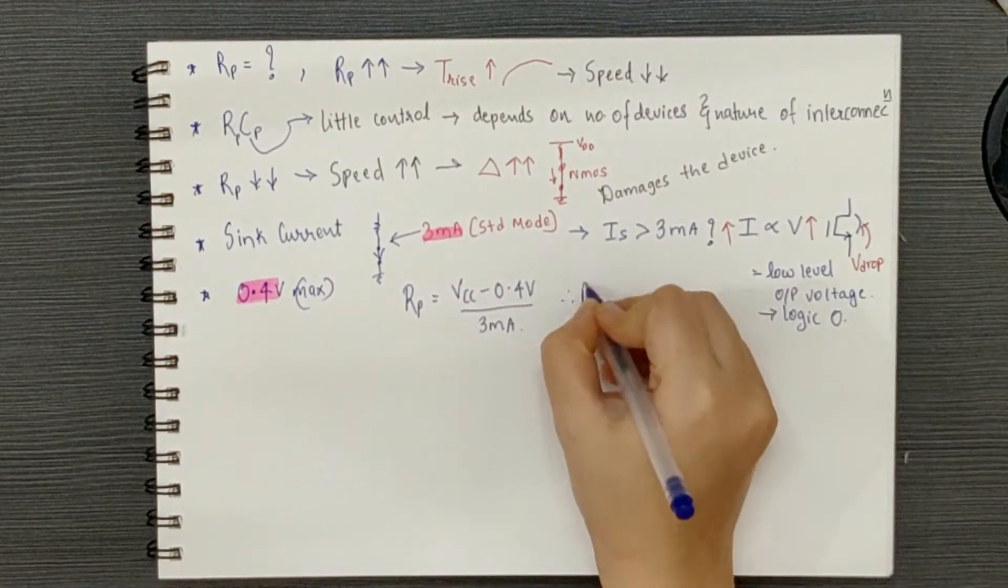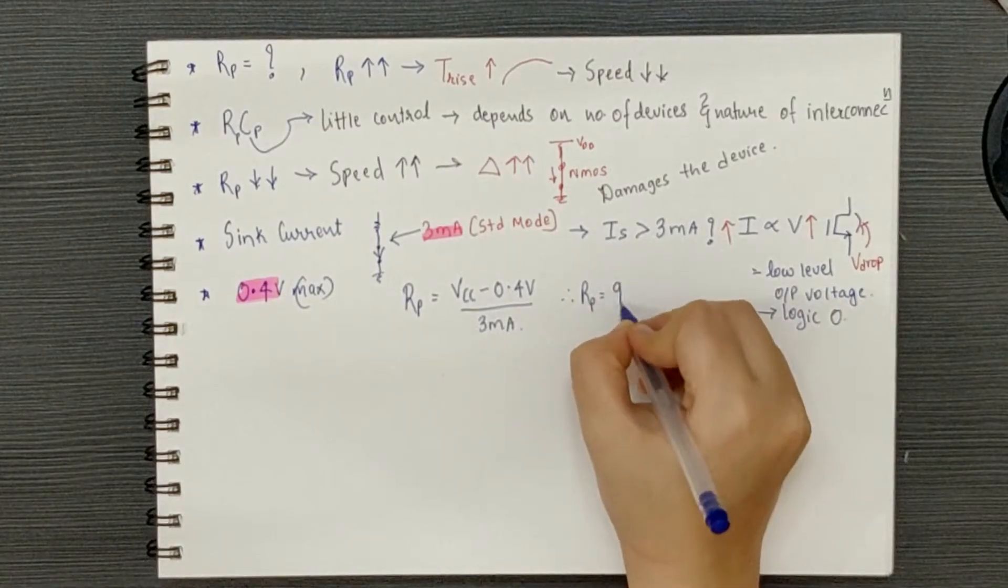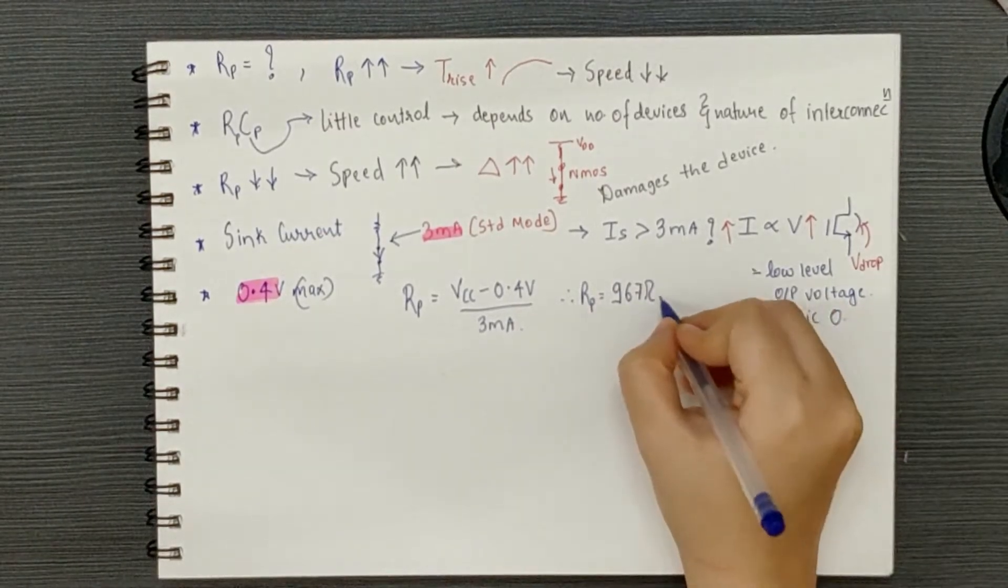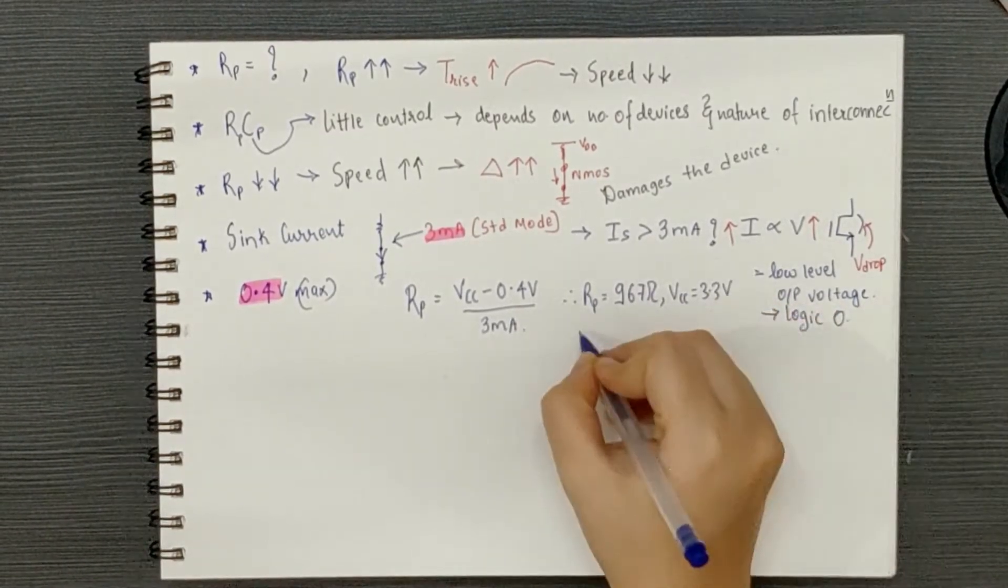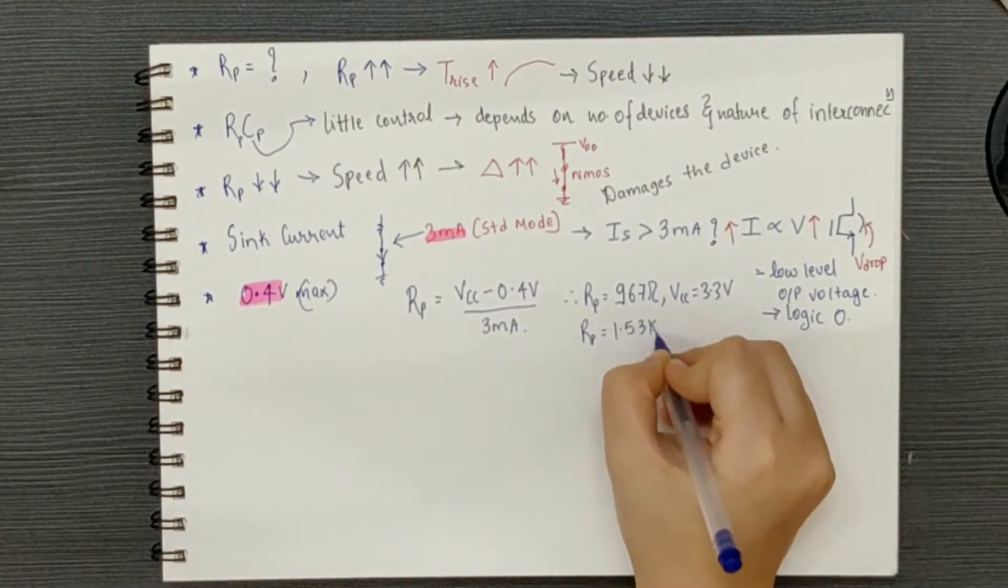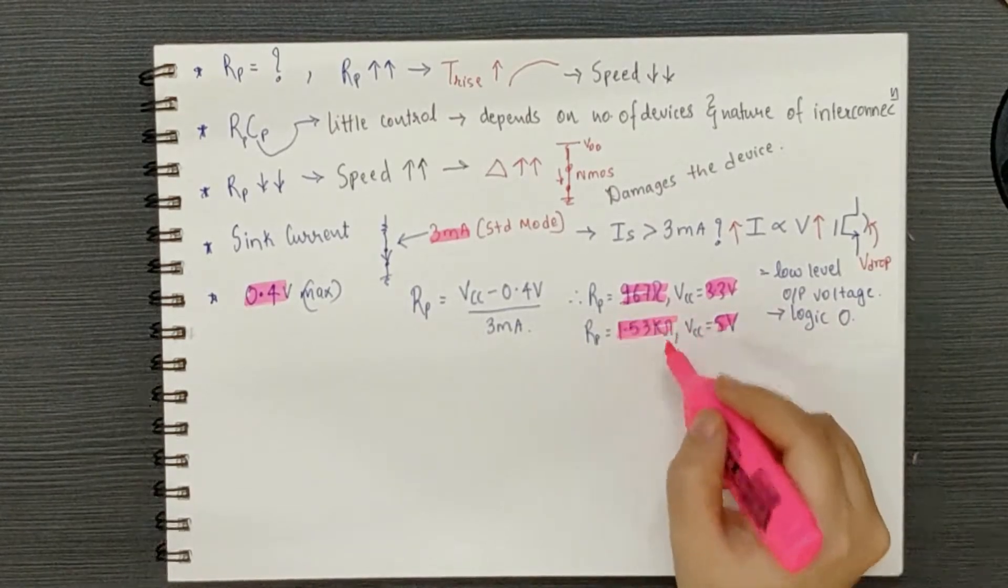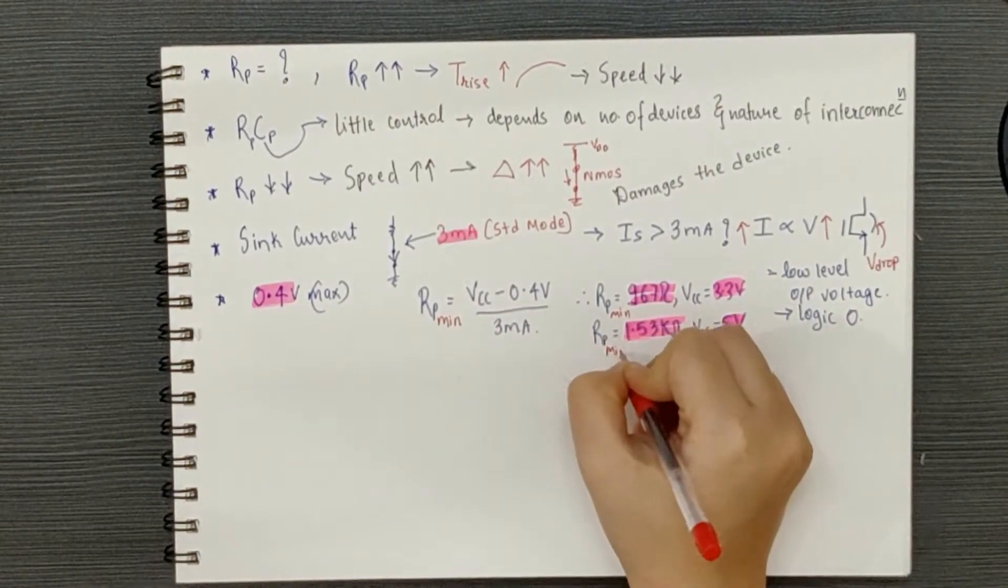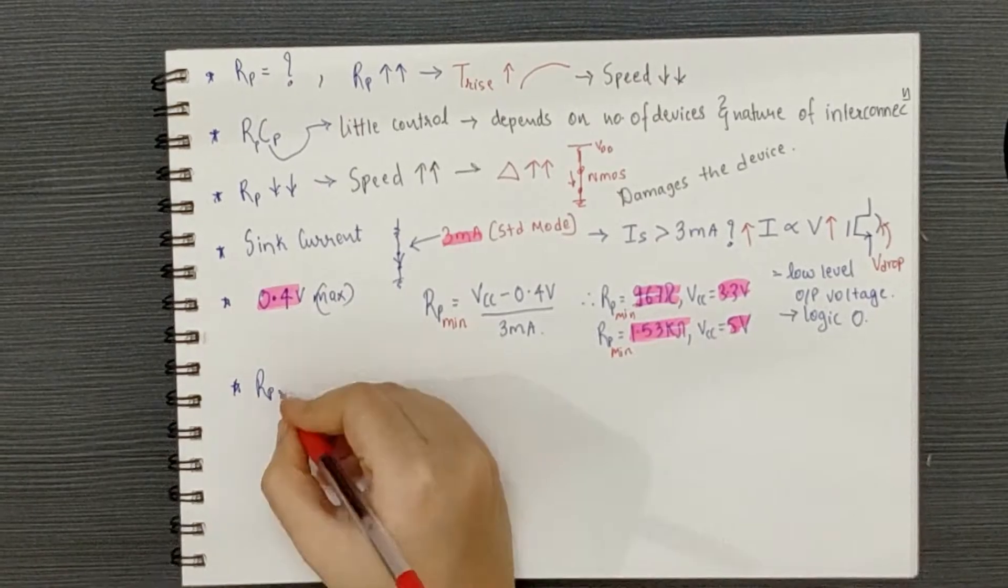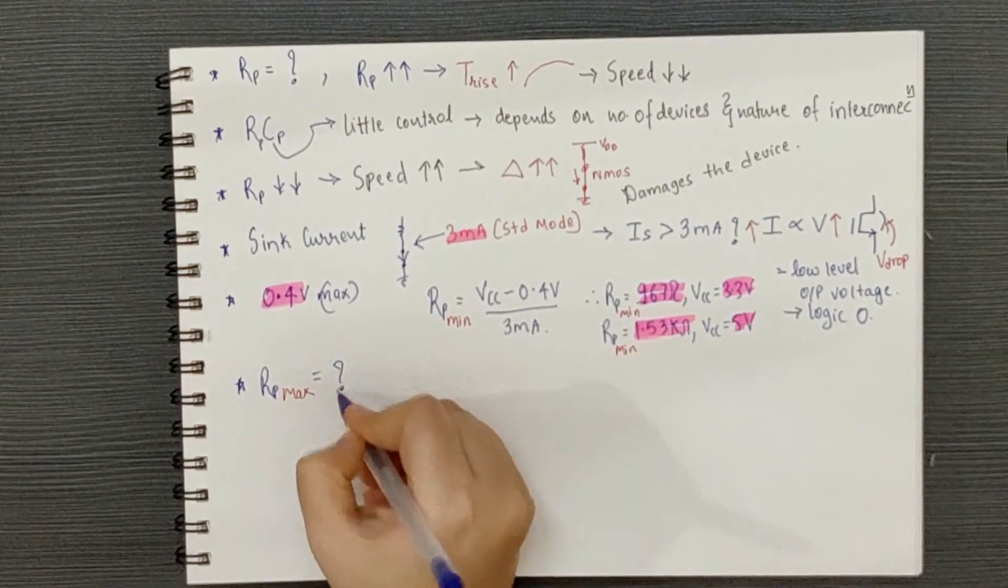So, if VCC is 3.3 volts, then RP will be 967 ohms and if VCC is 5 volts, in that case it will be 1.53 kilo ohms. Therefore, RP minimum is known.